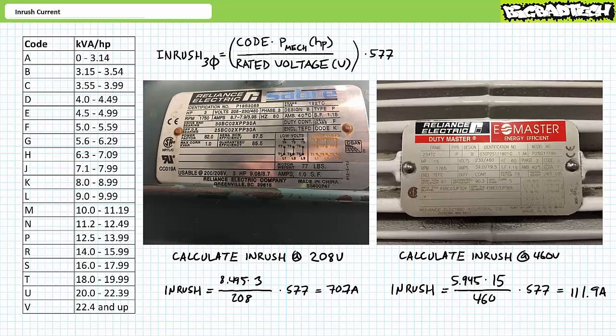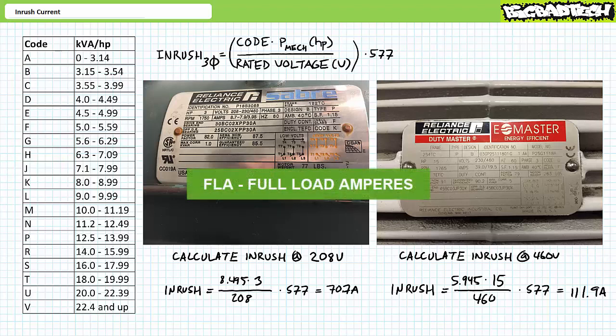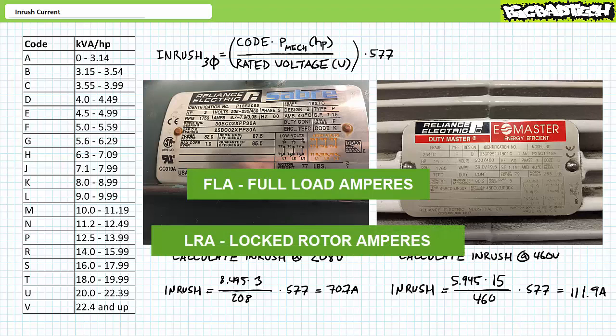Lastly, before we start discussing the theory behind inrush, it should be noted that some motor manufacturers take it upon themselves to perform inrush calculations in advance and explicitly state the expected inrush right on the motor nameplate. The entry FLA stands for full load amperes — another way of stating rated current, meaning it's the current drawn per phase when the motor is producing its rated mechanical power output. If you ever see the entry LRA, this is the inrush current, where LRA stands for locked rotor amperes — meaning this is the magnitude of the momentary surge of current drawn per phase when the rotor is locked and the motor is suddenly energized by full voltage. The LRA entry in the motor nameplate saves you the trouble of performing inrush calculations yourself.